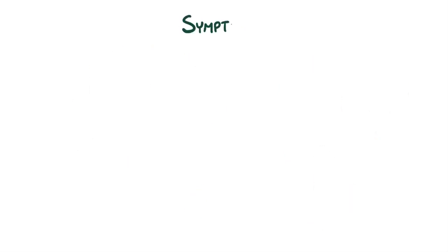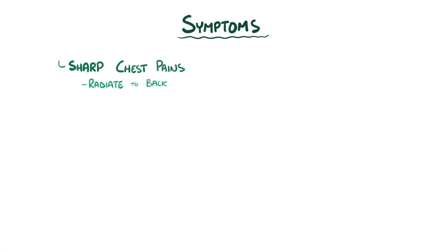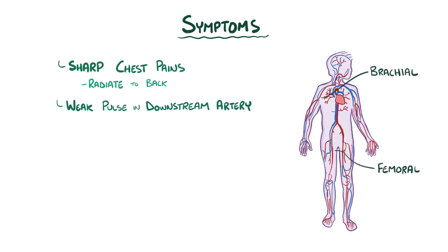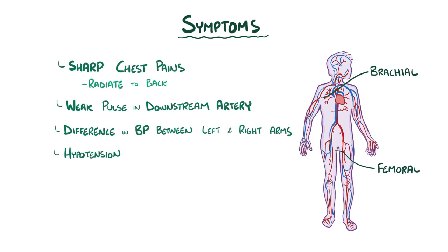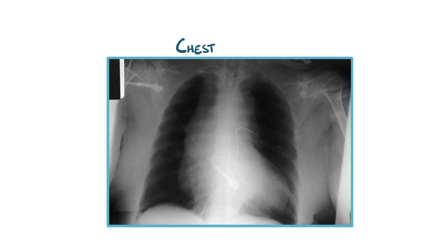The main symptoms of aortic dissection are sharp chest pains that often radiate to the back. A person might also develop weak pulses in downstream arteries like the brachial or femoral arteries, or sometimes there may be differences in blood pressure between the left and right arm. An aortic dissection is an emergency because it can lead to hypotension, or low blood pressure, as well as shock if there's rupture and significant blood loss. On a chest x-ray, there's typically a widened aorta.